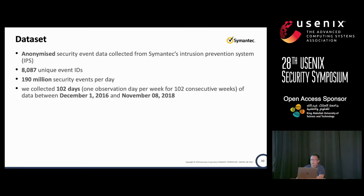For the dataset, we use anonymized security event data collected from a semantic intrusion and prevention system. The data contains around 8,100 unique event IDs, and per day we get about 190 million security events from millions of endpoints. We collected 102 days of data between 2016 and 2018, just to understand from a long-term perspective how vulnerabilities evolve. From a practical perspective, you don't necessarily need two years — you can use half a year and still observe a short-term evolution.